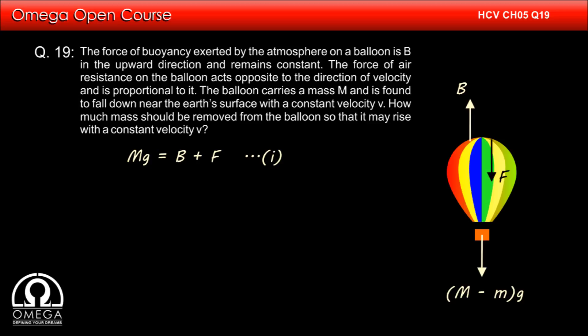Let us assume that mass m is removed from the balloon to make it rise upwards. Then in the free-body diagram of the balloon, the gravitational force will now become (M - m)g. Buoyancy will remain the same, but since the balloon is now moving upwards, air resistance will now act downwards.